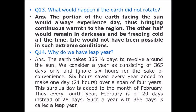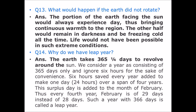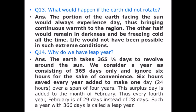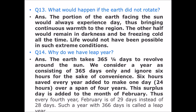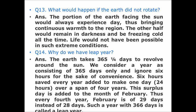Question number 14: Why do we have a leap year? Answer: The Earth takes 365 and a quarter days to revolve around the sun. We consider a year consisting of 365 days only and ignore 6 hours for the sake of convenience. These 6 hours saved every year add up to make 1 day (24 hours) over a span of 4 years. This surplus day is added to the month of February. Thus, every 4th year, February has 29 days instead of 28 days. Such a year with 366 days is called a leap year.